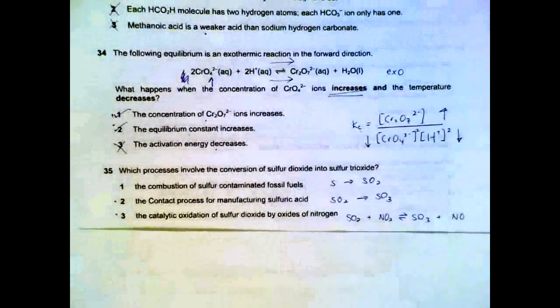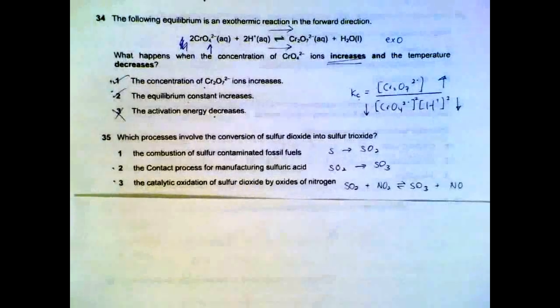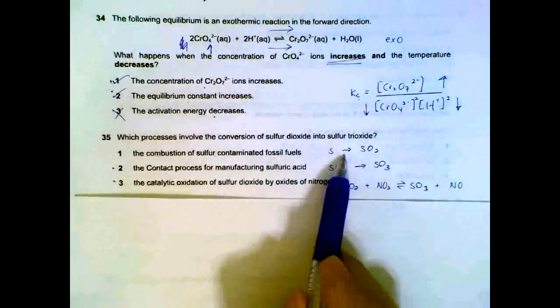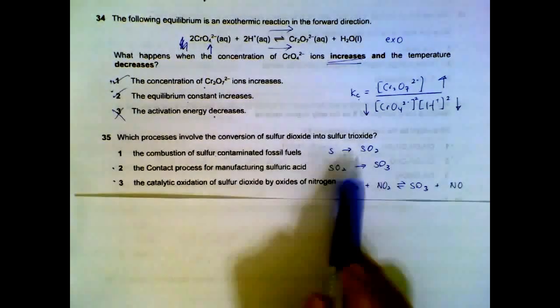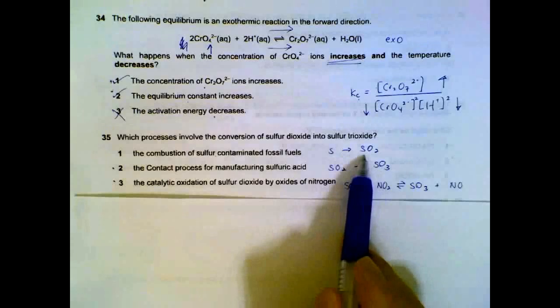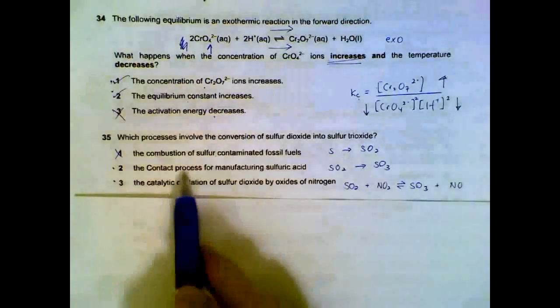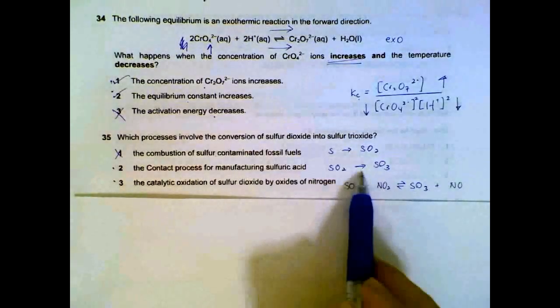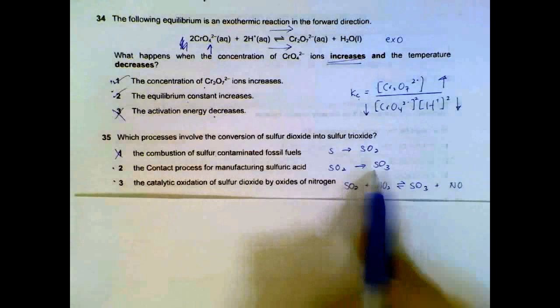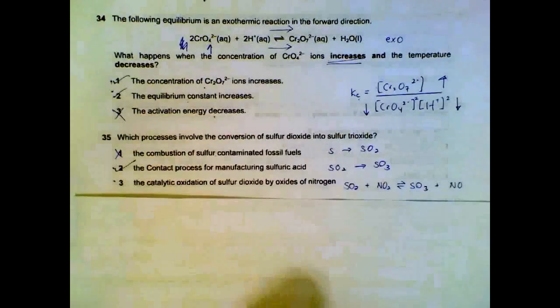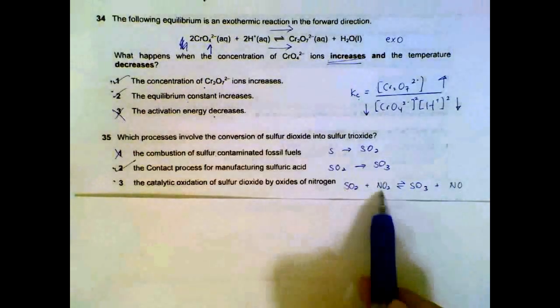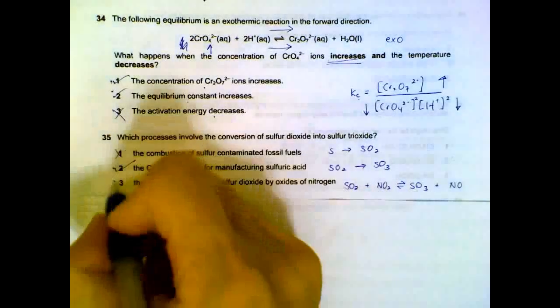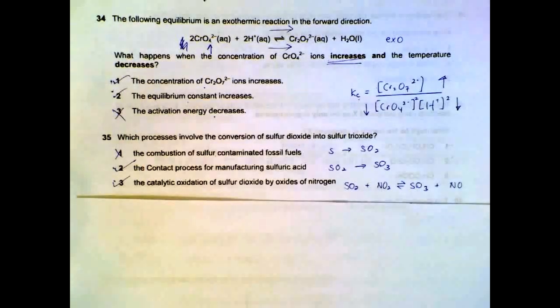Question 35. Conversion of sulfur dioxide into sulfur trioxide. We can have the burning. Sulfur will become sulfur dioxide, not trioxide. Contact process. When we have contact process, sulfur dioxide becomes sulfur trioxide with a catalyst. And there's a reaction between sulfur dioxide and nitrogen oxides to produce sulfur trioxide. So only statements 2 and 3 are correct.